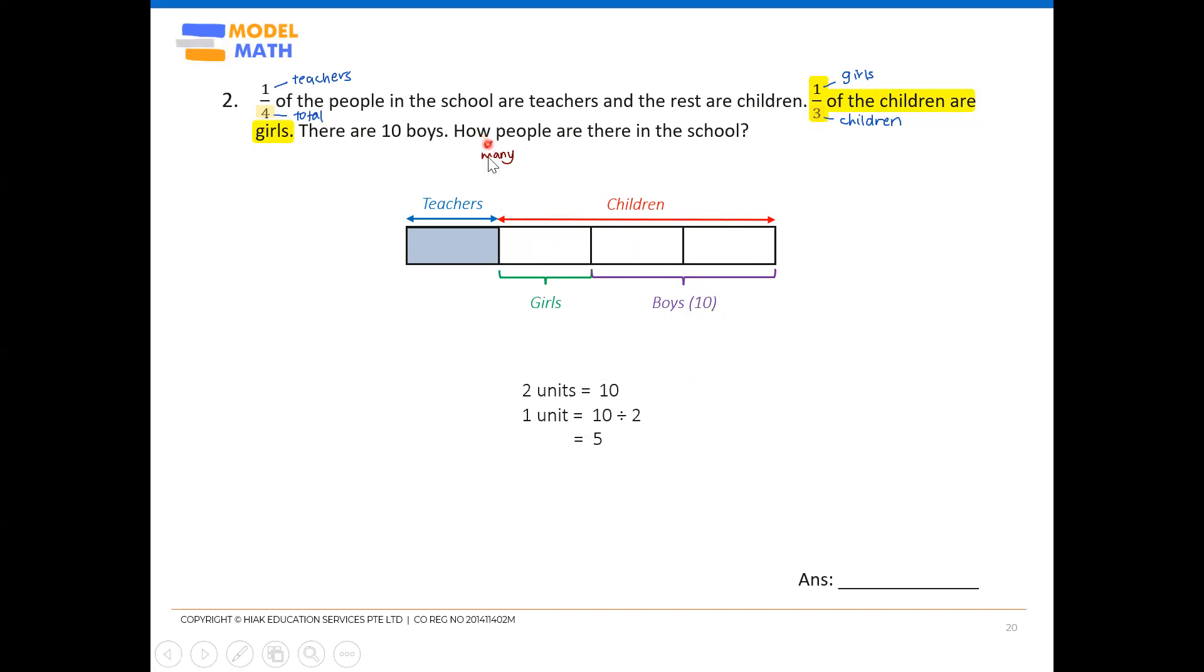Once you've found one unit's value, read back the final question. How many people are there in the school? People represents everyone. So everyone will be one, two, three, four units. So, we're going to find the value of four units. Four times five, and that will be 20 people altogether.